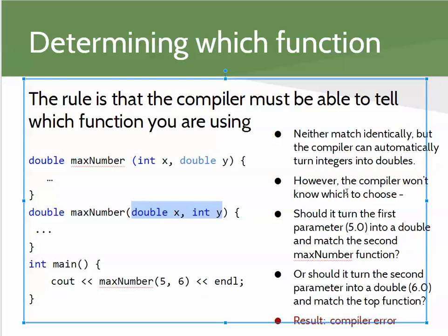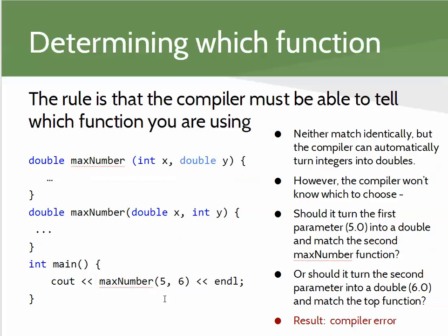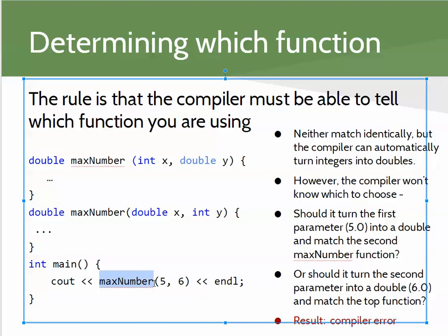Because the compiler does not necessarily know what to choose, there's an ambiguity and it will spit back an error. While thinking of different number of parameters or a different data type for at least one parameter as a strict rule is nice, there are exceptions. It all comes down to whether the compiler can, completely unambiguously, guarantee it's calling the right function — and if it can't, it will be a compiler error.